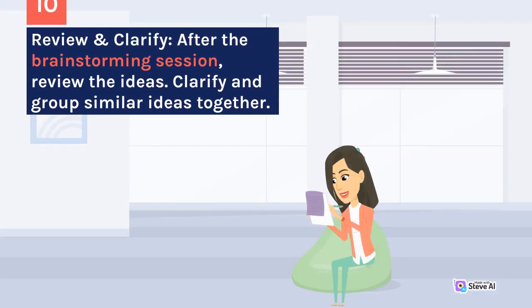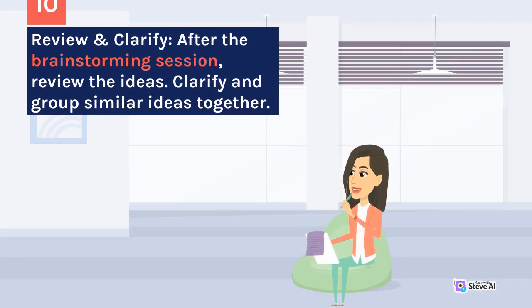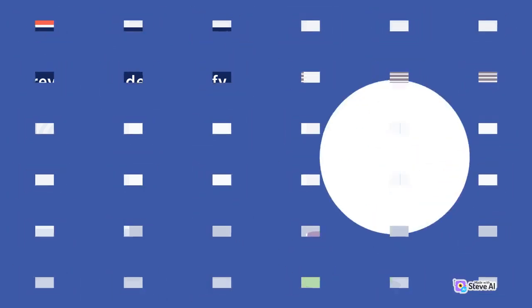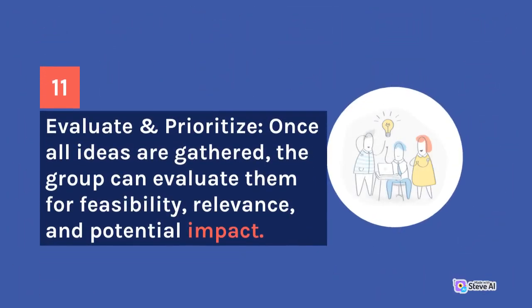Review and Clarify: after the brainstorming session, review the ideas and clarify and group similar ideas together. Evaluate and prioritize: once all ideas are gathered, the group can evaluate them for feasibility, relevance, and potential impact.